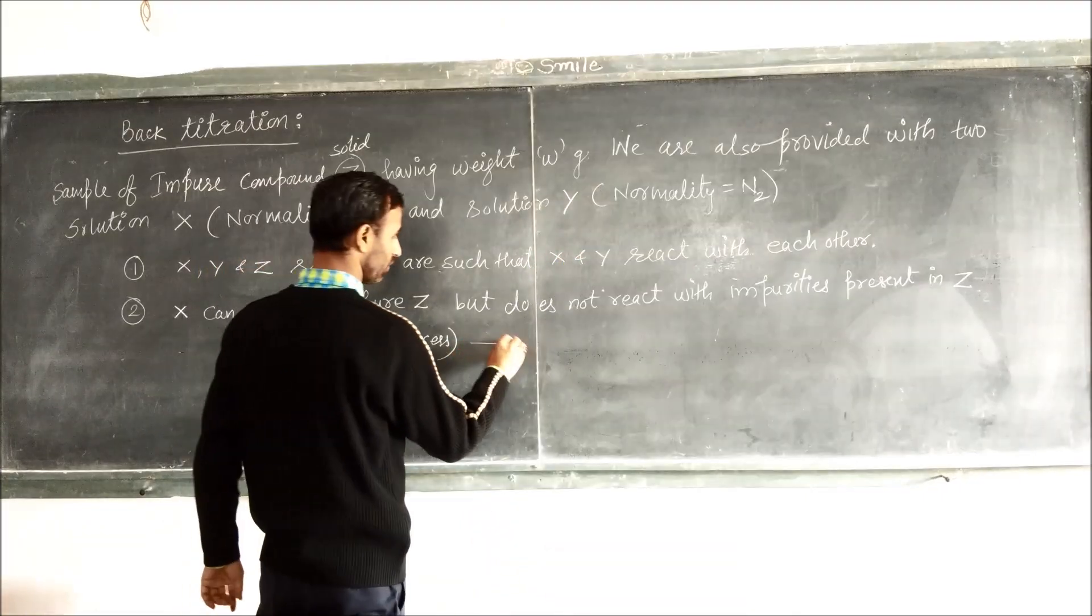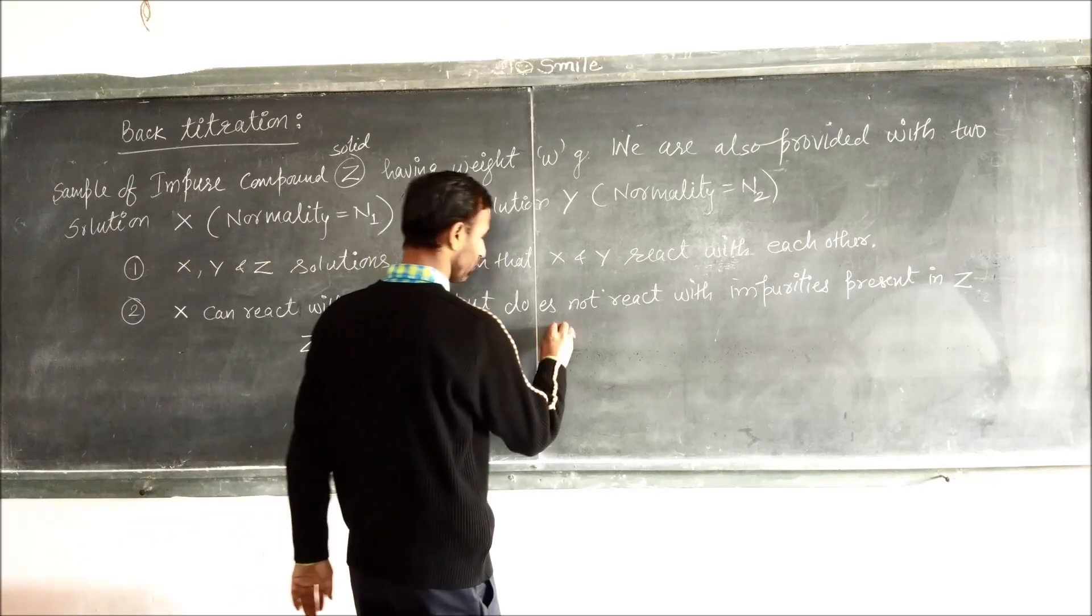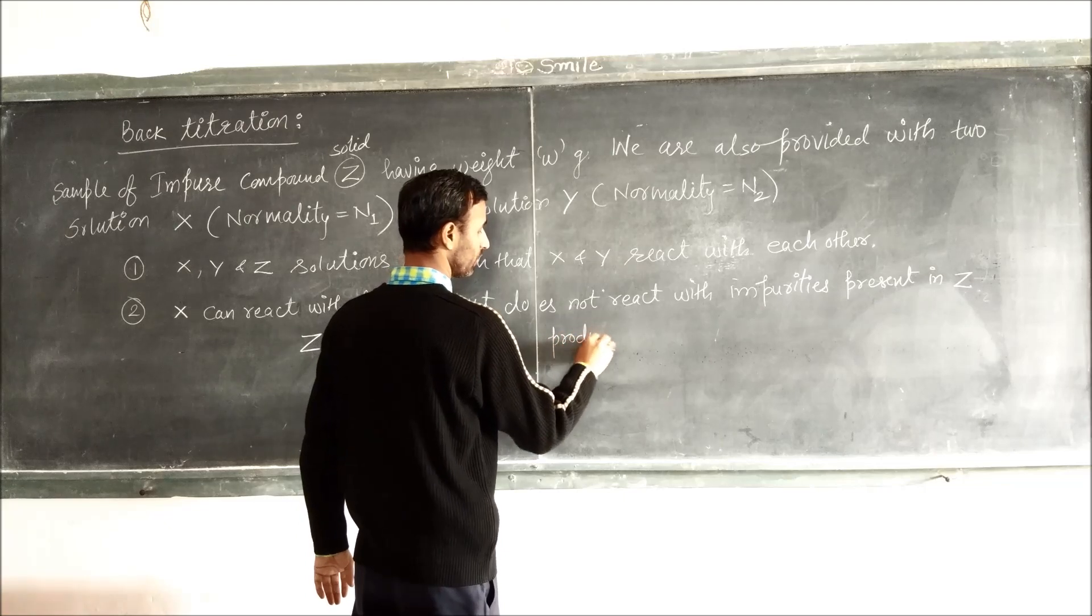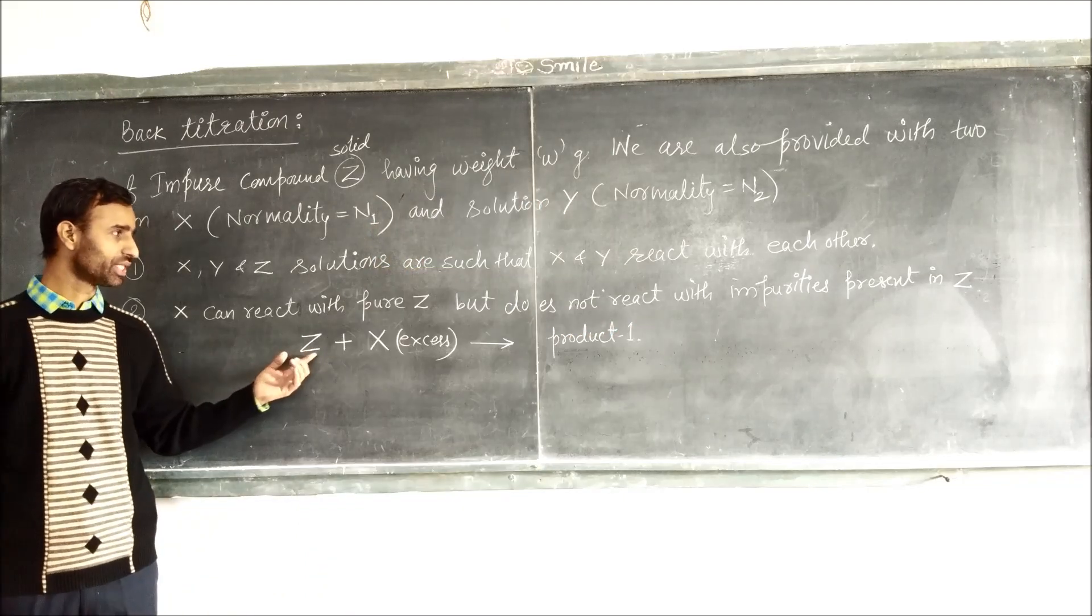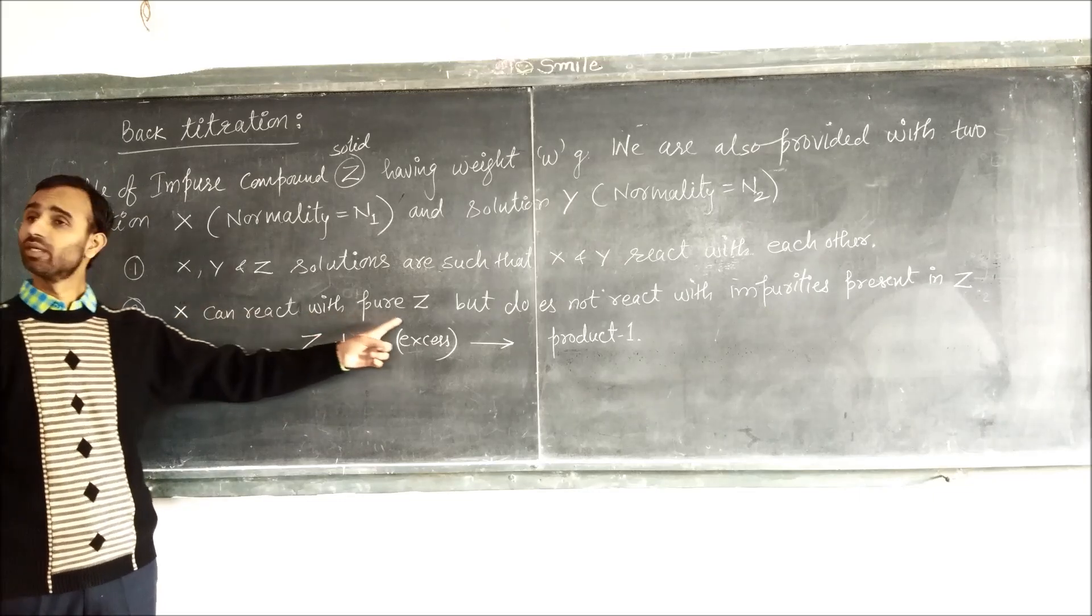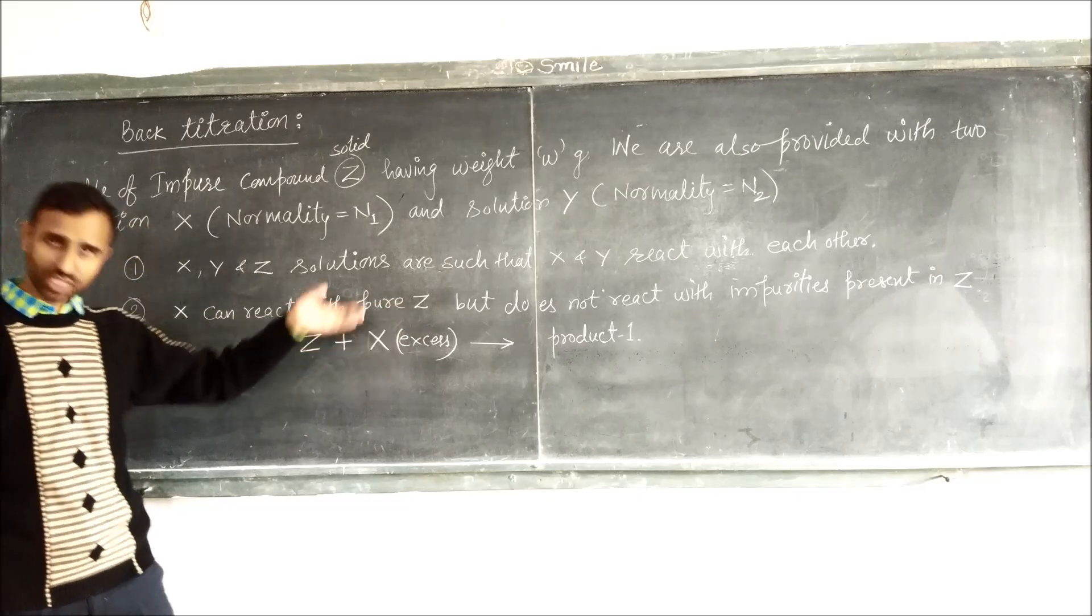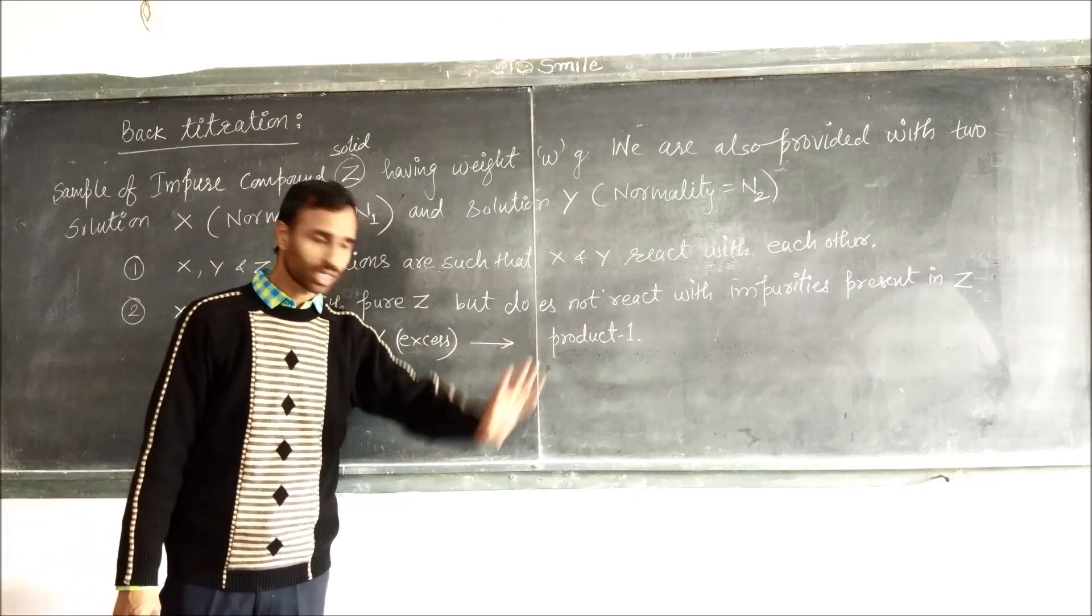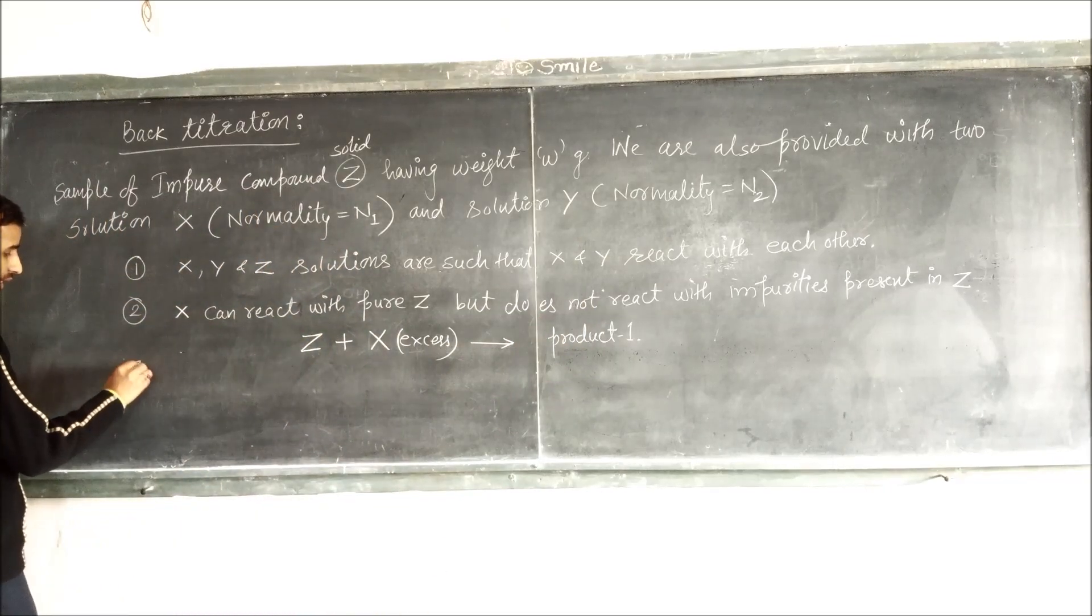Pure Z can react with X, then we get some product, let us take this product 1. Obviously if Z reacts with X, because condition is X can react with pure Z, so when X reacts with pure Z it gives some product, and that product is taken as 1.